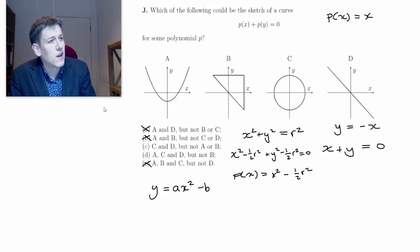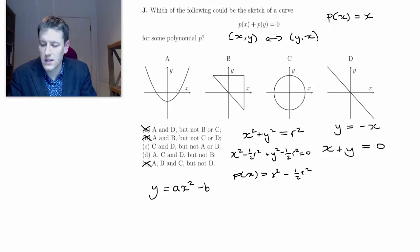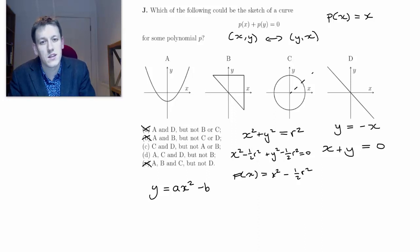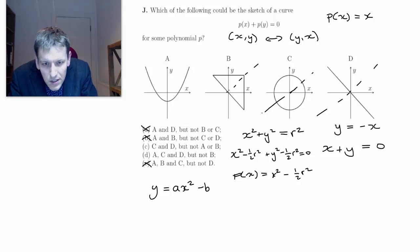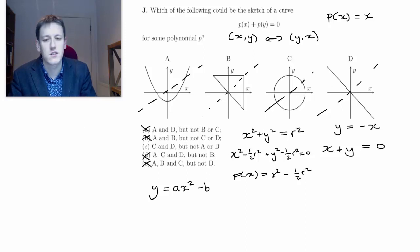If we want to be a little bit more rigorous, I should notice the symmetry: p(x) + p(y) = 0 means that if (x, y) satisfies this equation, then (y, x) also has to satisfy the equation. So any graph of this would have to have symmetry in the line y = x. My circle has symmetry in y = x; the line y = -x has symmetry in y = x. But this curve - the one that looks like a parabola - does not have symmetry in the line y = x. So we rule out curve a, which leaves us with just answer option c.